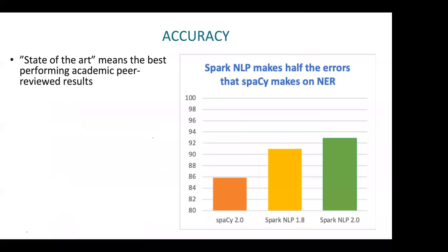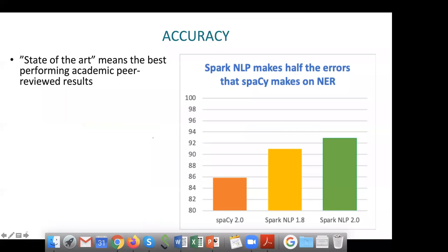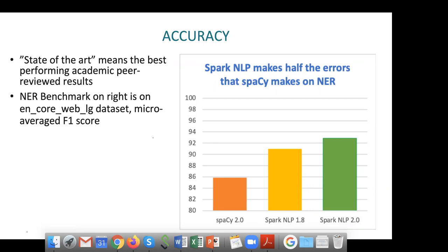In terms of accuracy: state of the art is not a marketing term, it's an academic term which basically means the best accuracy on academic benchmarks that have been peer reviewed. Our goal is to achieve that in a production setting that is also trainable and scalable. The benchmark shown is on the classic CoNLL EN core web LG dataset for named entity recognition on micro-average F1 score. Both spaCy and Spark NLP have gone beyond the original numbers, and we have updated numbers confirming this is still the most accurate you can get.